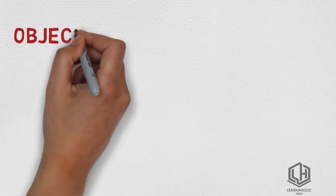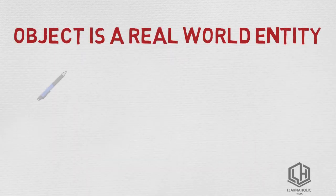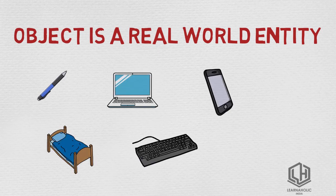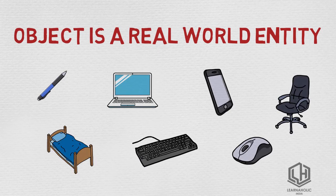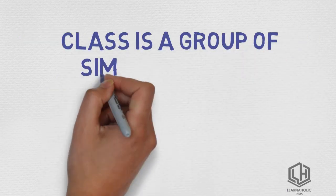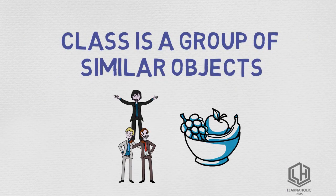Second: object is a real-world entity such as pen, laptop, mobile, bed, keyboard, mouse, chair, etc. Whereas class is a group of similar objects.